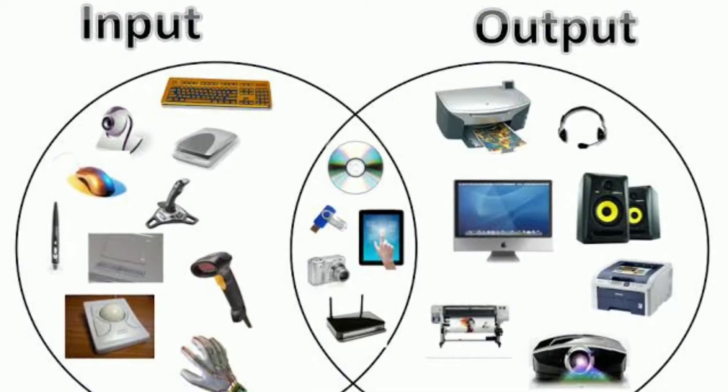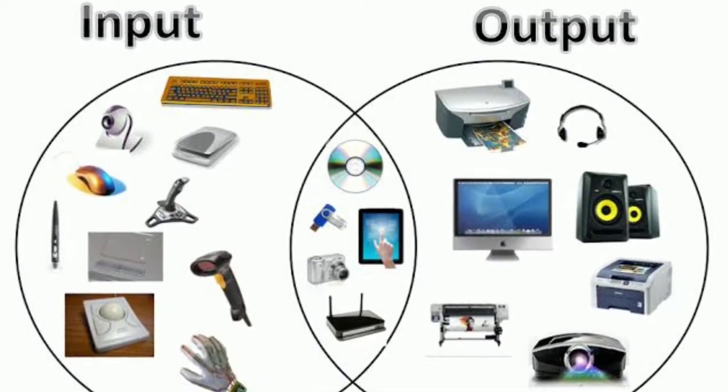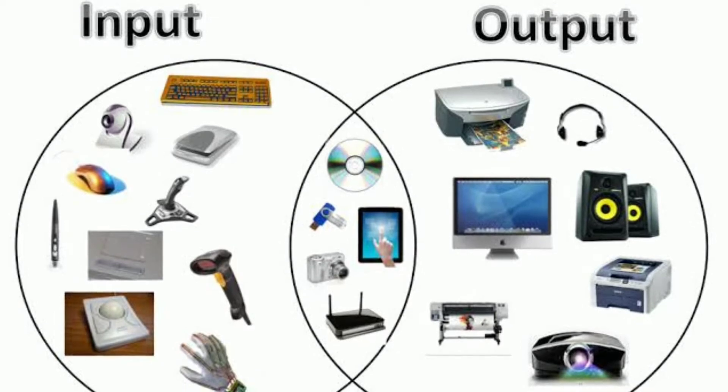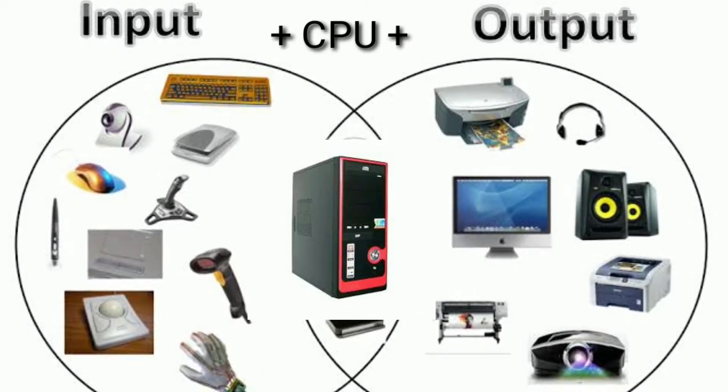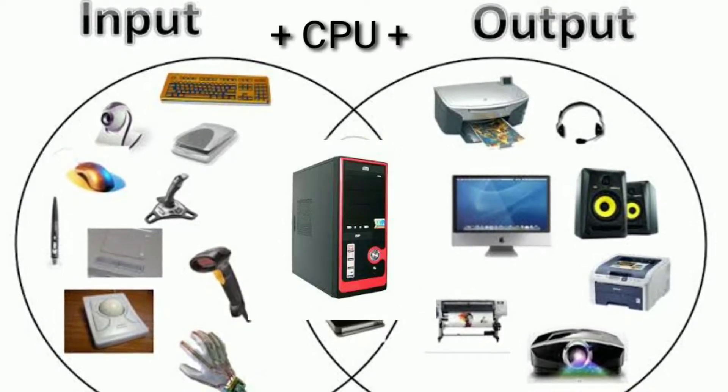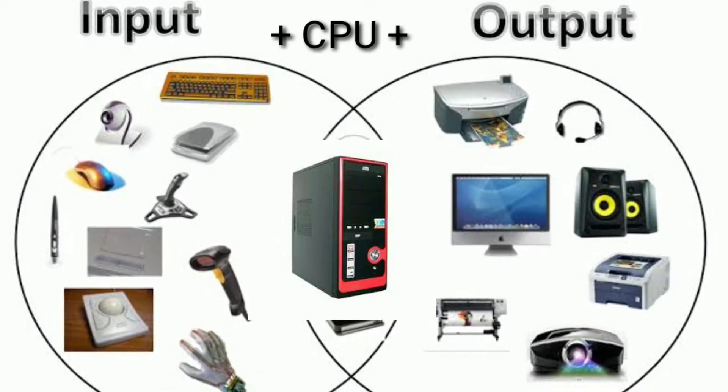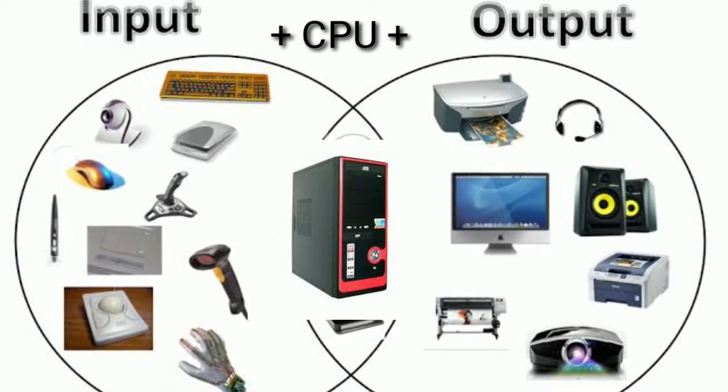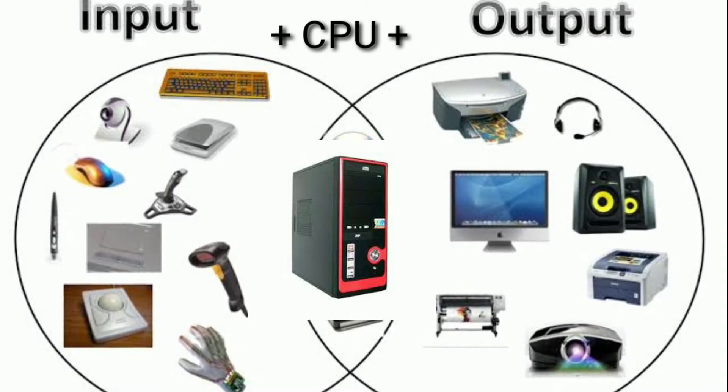The parts of a computer can be classified into three units. They are the input unit, the central processing unit, and the output unit. Input unit.